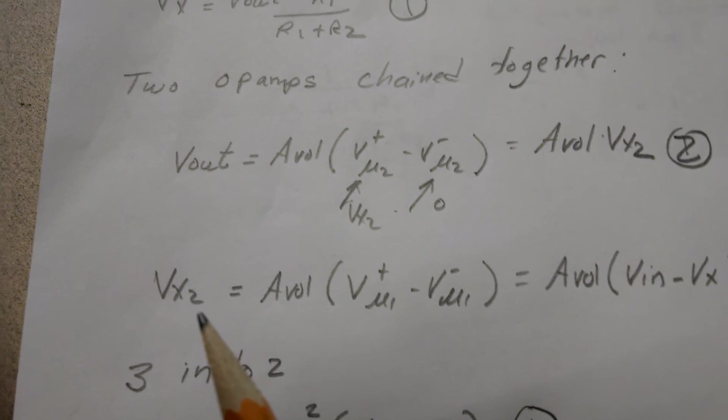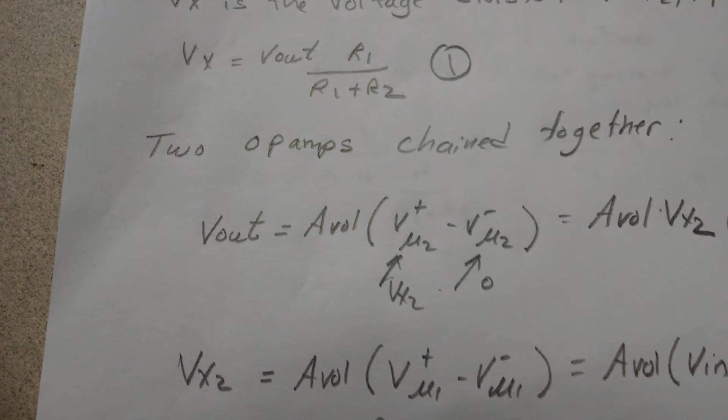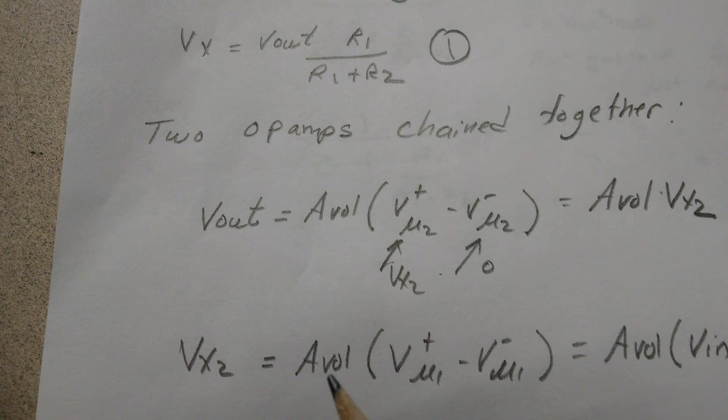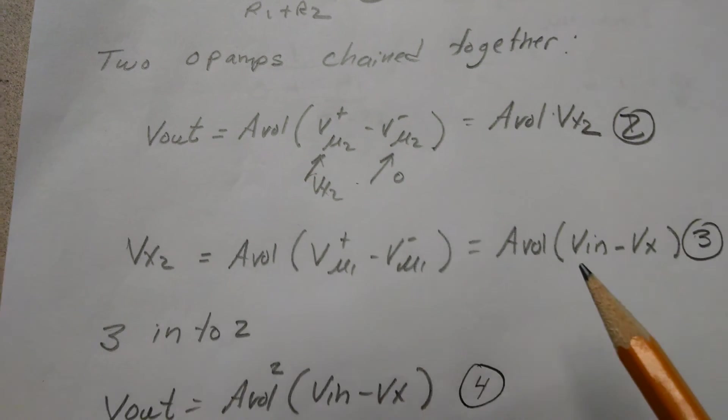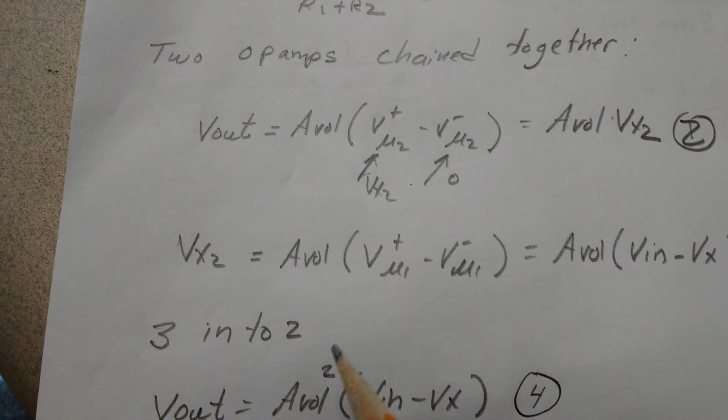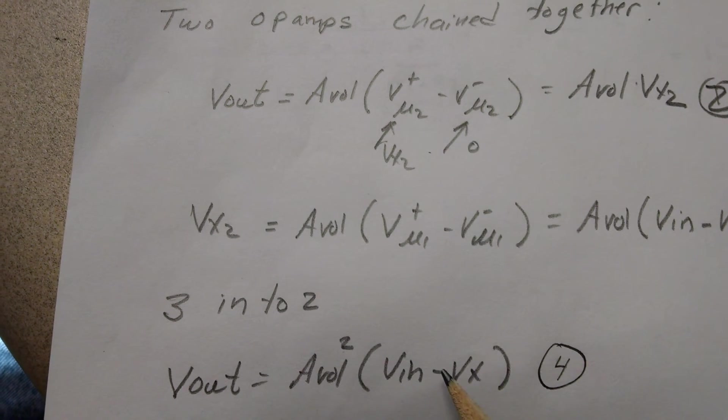Then you substitute the open-loop gain of the next stage. Vx2, what does that equal? Open-loop gain times the difference of the inputs on U1. Three into two, we have Vout equals open-loop gain squared times (Vin - Vx).